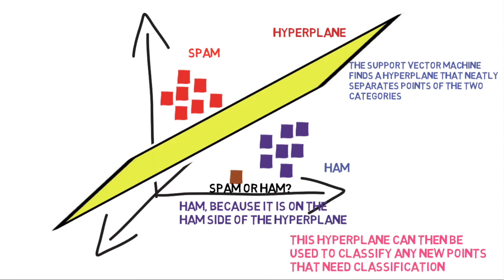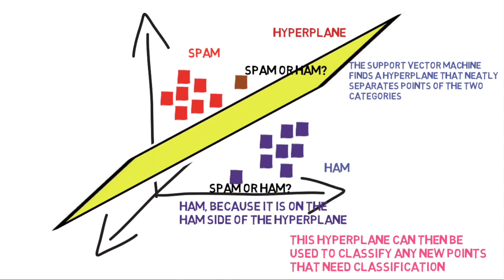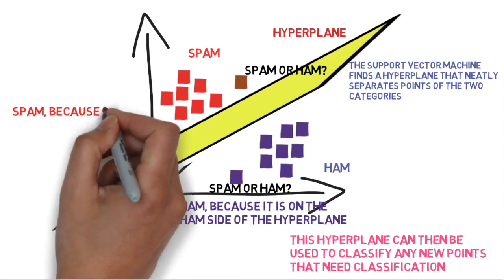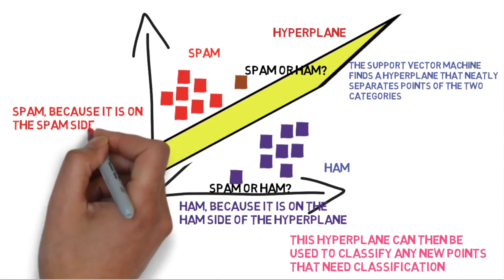Now, this hyperplane then acts as a boundary. So any new problem instance that comes in, if it's on the spam side of the hyperplane, it will be classified accordingly.